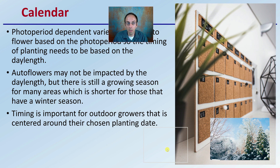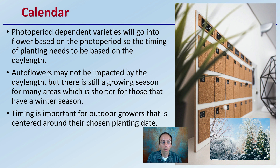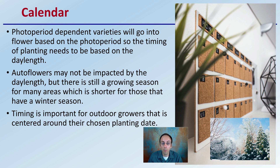Photoperiod-dependent varieties will go into flower based on the photoperiod, so the timing of the plants needs to be based on day length — and that's timing based on when you choose to plant them. Autoflowers may not be impacted by the day length, but there's also the growing season for many areas, which is shorter than those that have a winter season. Even though autoflowers will flower at a certain number of days old, we want to make sure we're maximizing favorable plant environmental conditions based on the season.